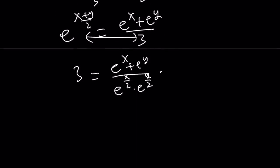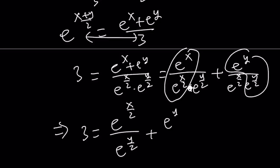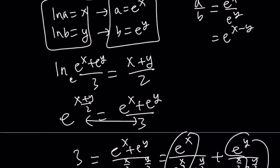And from here, I can go ahead and split it up. e^x over e^(x/2) times e^(y/2) plus e^y over e^(x/2) times e^(y/2). Make sense? So now I can go ahead and divide these by subtracting the exponents. So this gives me 3 equals e^(x/2) divided by e^(y/2) plus e^(y/2) divided by e^(x/2). And guess what? These are reciprocals. And we're looking for sort of this one, right? Almost there. Almost there. Pretty close.